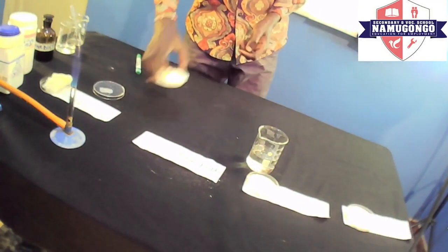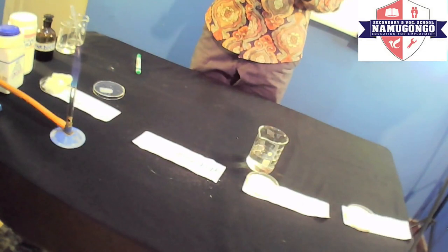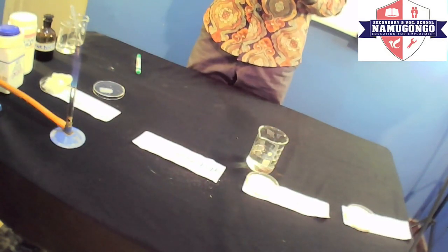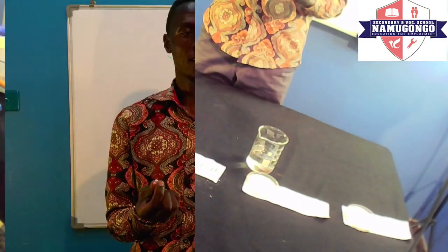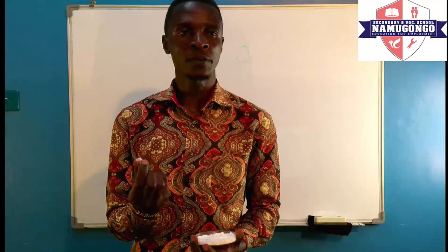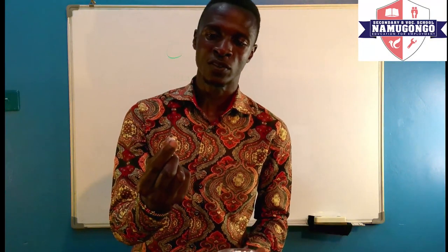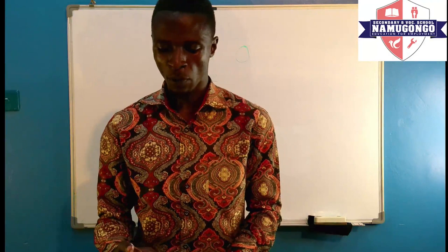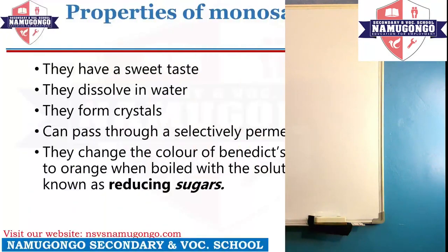The third property is that monosaccharides are normally crystalline in nature. If you touch them, they are crystalline. These are fine crystals of glucose.